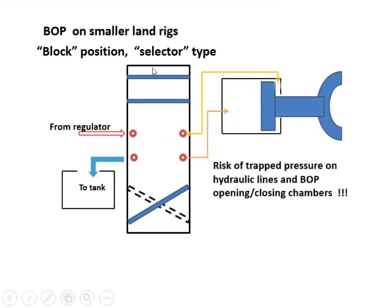Smaller land rigs are usually using selector type valve. There will be no connection from BOP hoses to the accumulator when the valve is in the middle position. There is a risk of trapped pressure inside the hoses or inside the BOP chamber with this type of three-position four-way valve. Always follow the manufacturer procedures to release the trapped pressure prior to doing any maintenance or repair job to avoid any potential accident.